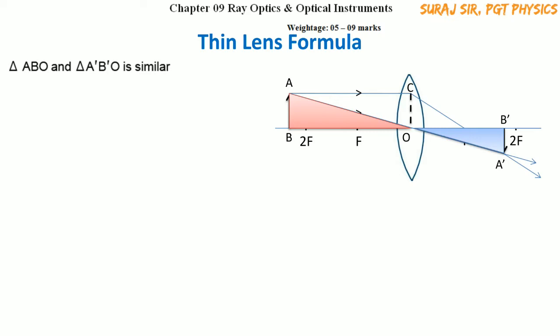Since the two triangles are similar, the ratio of their sides is in proportion. We take the ratio of heights: A'B' / AB = OB' / OB — that is, the ratio of their corresponding bases.